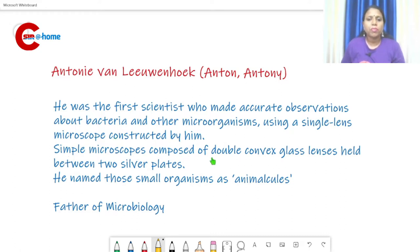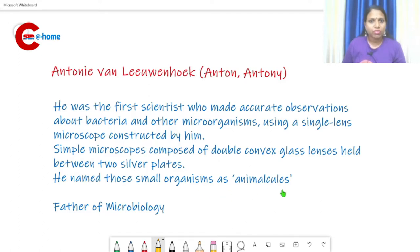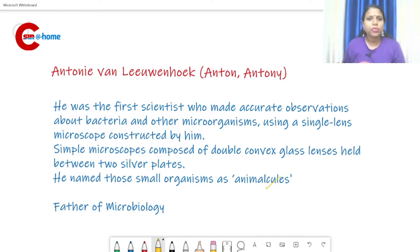The simple microscope was composed of double convex glass lenses held between two silver plates. He observed microorganisms in his microscope and called them 'animacules.' Animacules means microscopic animals — microscopic organisms.